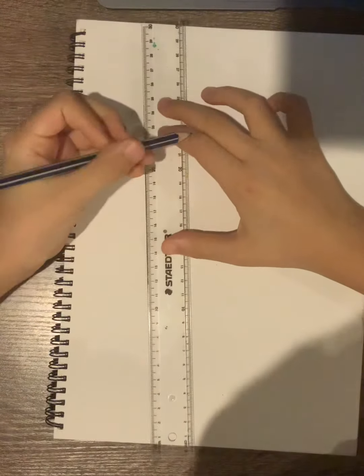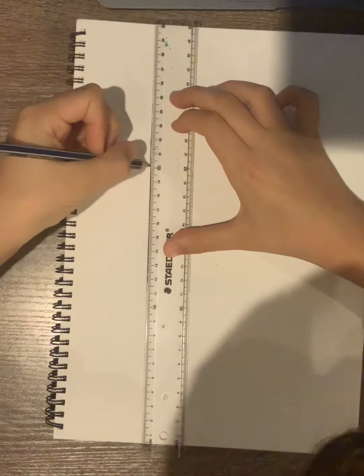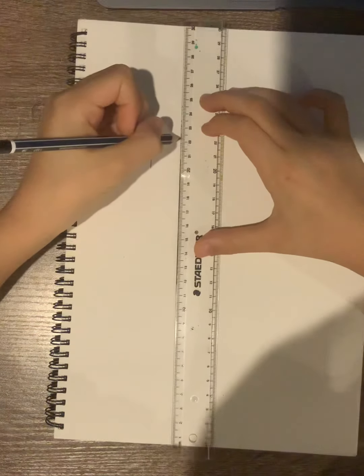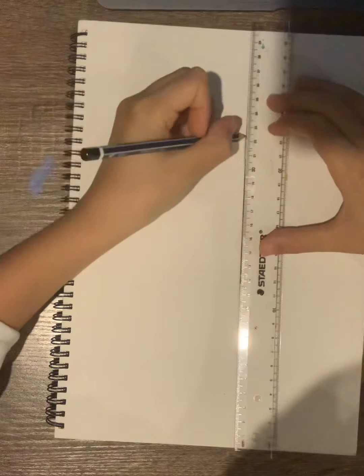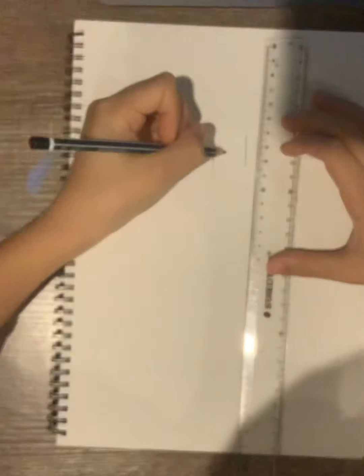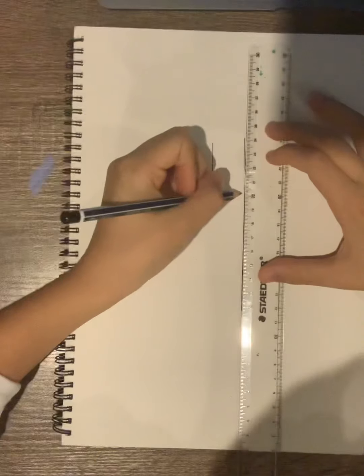Get your pencil and draw eight lines like this with the ruler, round about this space. And then the other four lines under, like around here.